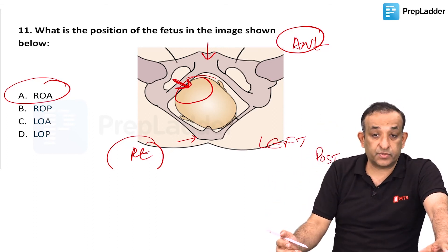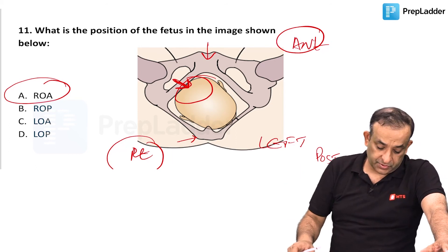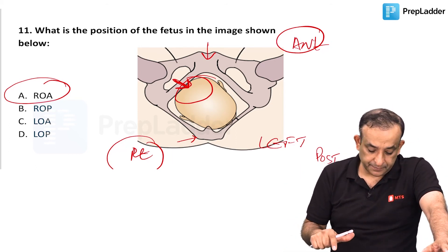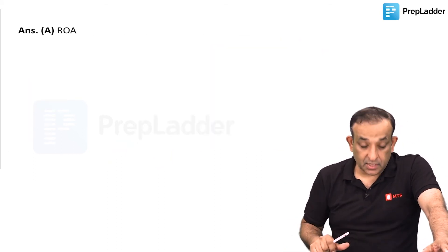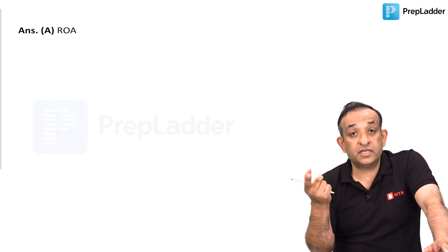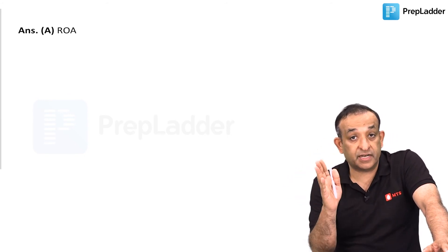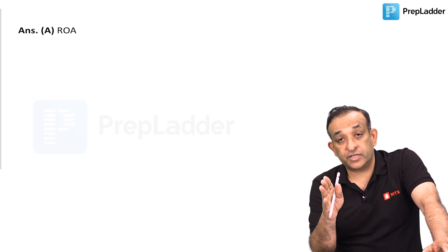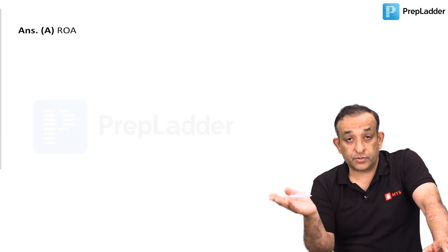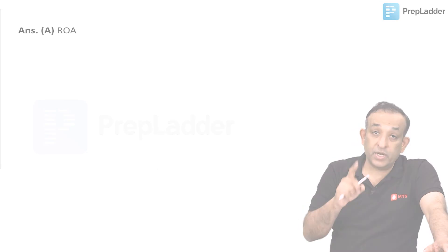If you have to mark one, please go ahead and mark left occipital transverse as the commonest position. This position shown is right occipital anterior. Occipital posterior is the most common malposition, and that's what you should be reading — they regularly ask questions on it. Occipital posterior will deliver.